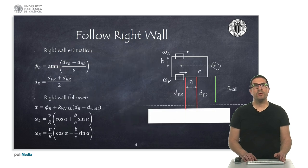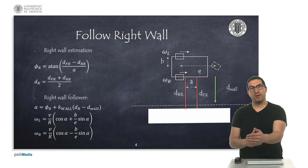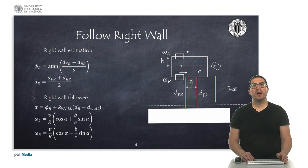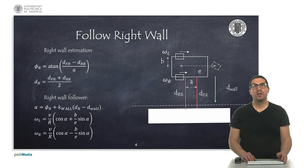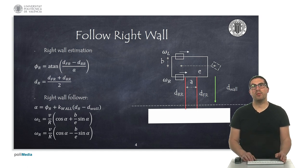To follow a wall on the right, we will use proximity sensors on the right side of the robot. We need two sensors, one in front and one on the rear. That will allow us to estimate the angle and distance of the wall with respect to the robot.